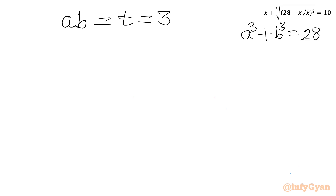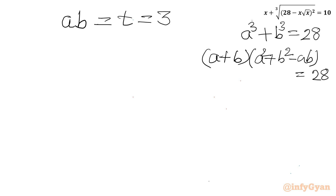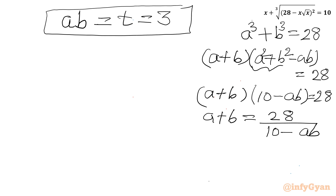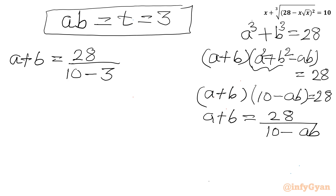Now with ab = 3 and a³ + b³ = 28, applying the identity: a³ + b³ = (a + b)(a² + b² − ab). So (a + b)(10 − 3) = 28, giving (a + b) × 7 = 28, therefore a + b equals 28 ÷ 7 which equals 4.